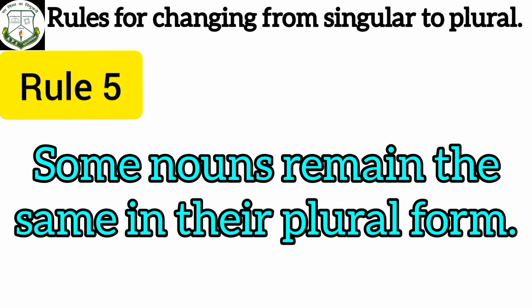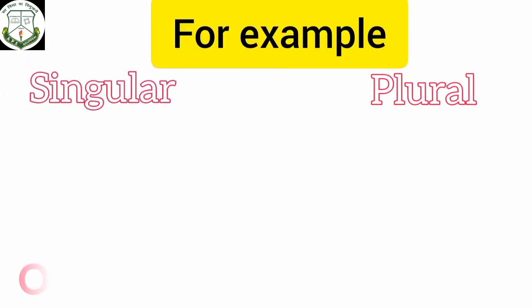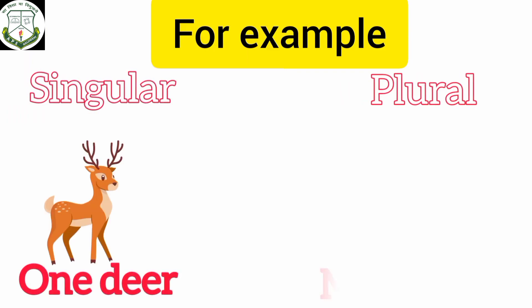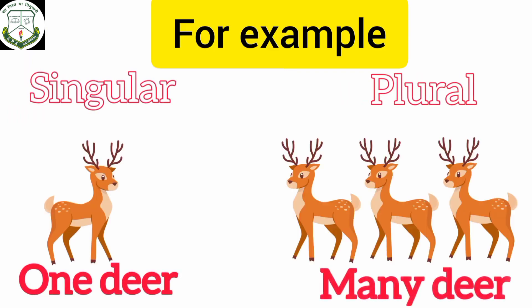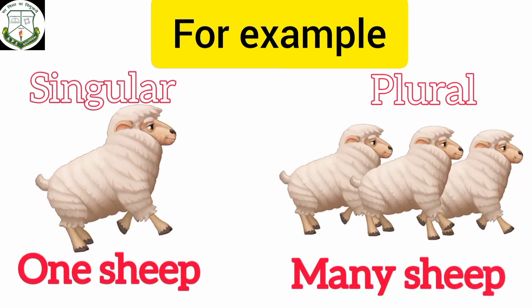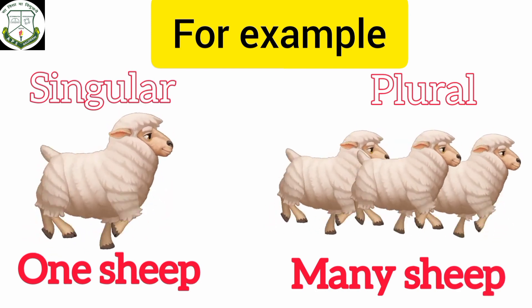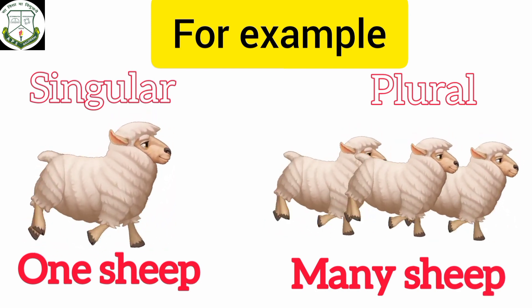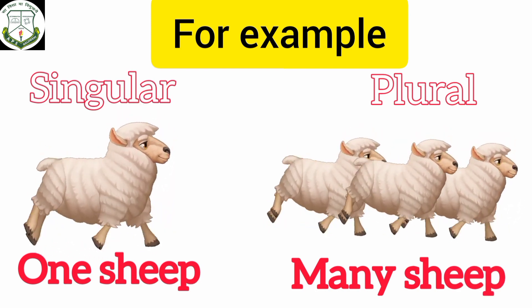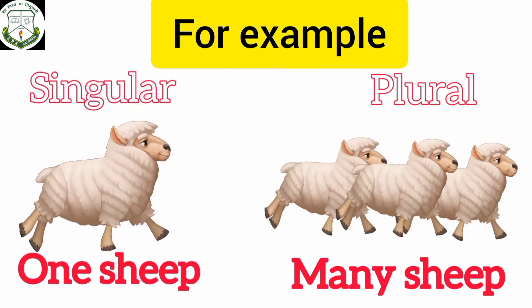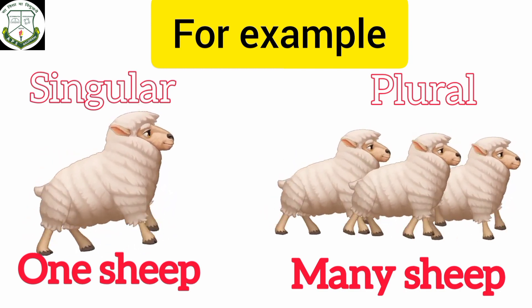Rule number 5: some nouns remain the same in their plural form. For example, one deer — many deer. One sheep — many sheep. If you look carefully, the spelling for the singular form and the plural form is the same.